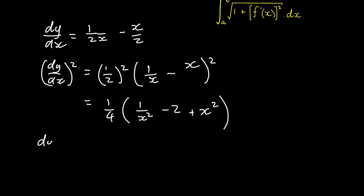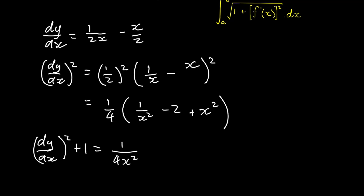So now (dy/dx)² + 1 is equal to — and we'll distribute this 1 over 4. We have 1 over 4x squared. And 1 over 4 times negative 2 is minus 2 over 4, which is just negative 1 over 2. And then we're adding a 1, so negative 1 over 2 plus 1 is just 1 over 2. So plus 1 over 2, and then plus x squared over 4.